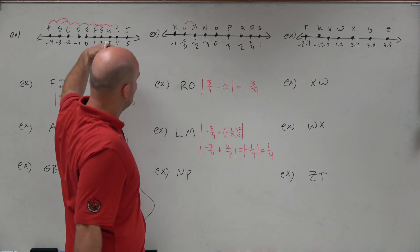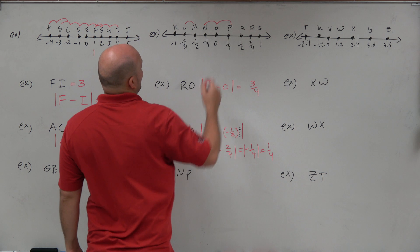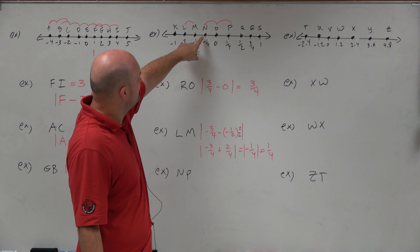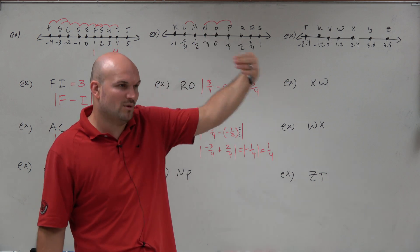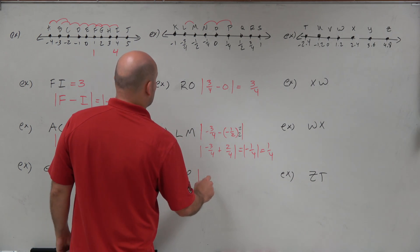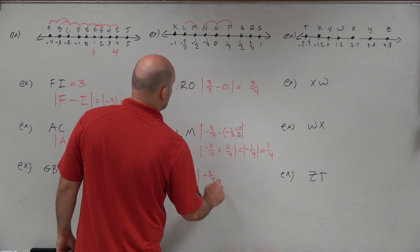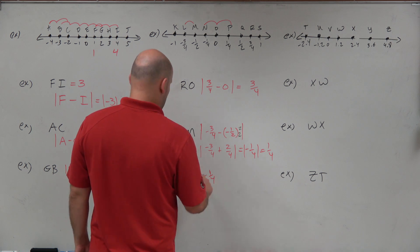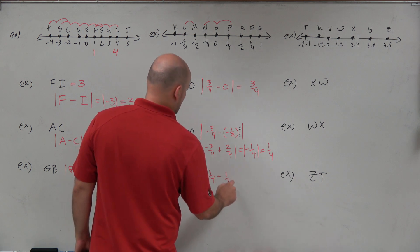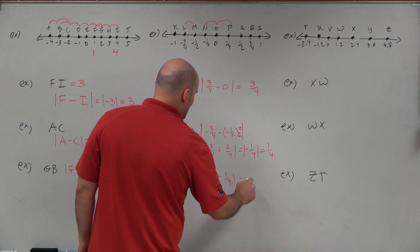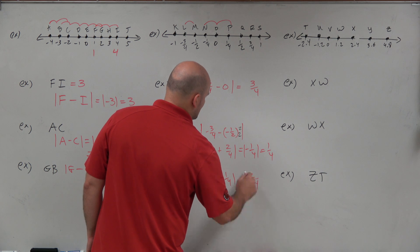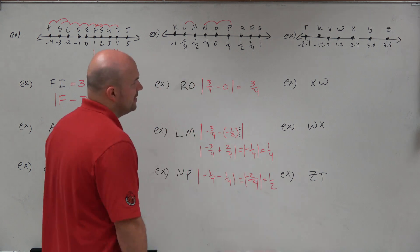That was going from right to left. Then we have n to p. This one's interesting — you know that from there to there is 1/4, and there to there is 1/4, so 1/4 plus 1/4 is 1/2. But let's go through the math: n is negative 1/4, minus p which is 1/4. That equals |negative 2/4|, which reduces down to 1/2.